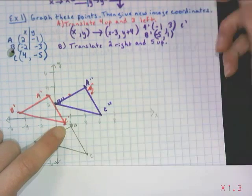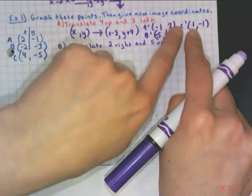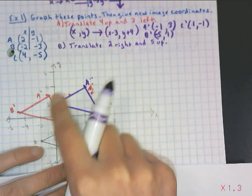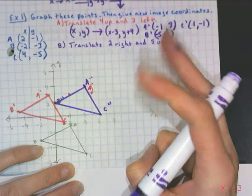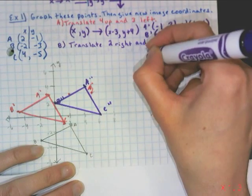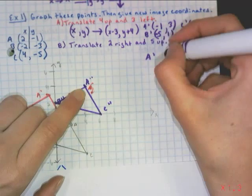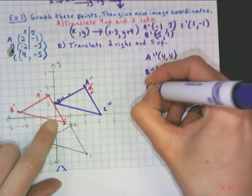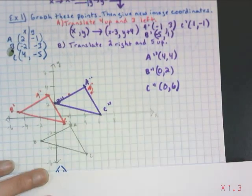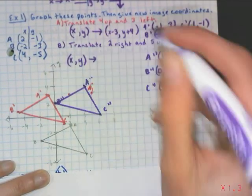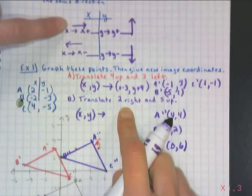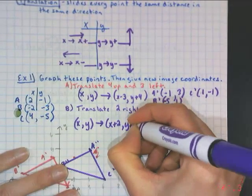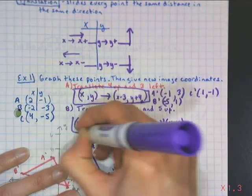C prime looks like it is at (1, −1). Verifying: 4 − 3 = 1, and −5 + 4 = −1. For the second translation — the A double prime, B double prime, C double prime triangle — translating 2 right and 5 up gives the rule (X + 2, Y + 5). That means adding 2 to X and adding 5 to Y for every point.